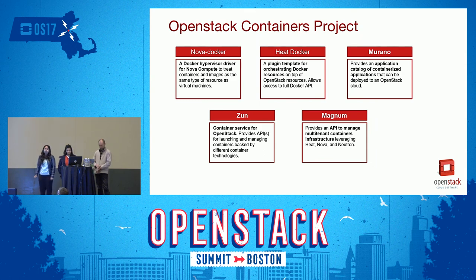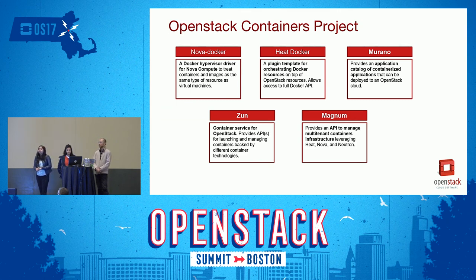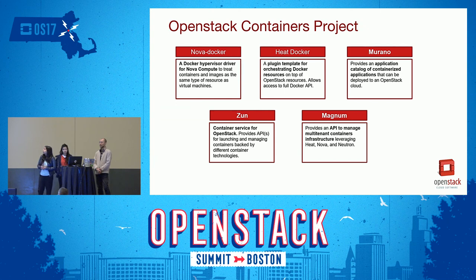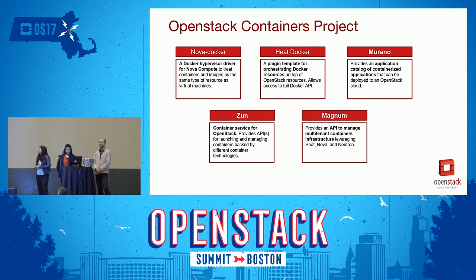The first project is Nova Docker. Nova Docker started as an in-tree project with Nova — it was simply a Docker hypervisor driver for Nova, so users could run containers the same way they run VMs. You just say Nova boot and provide the image for your container. However, VMs and containers are not the same, so they decided to fork it into a new project. Eventually, because it did not suit the lifecycle of VMs, this project was deprecated this year.